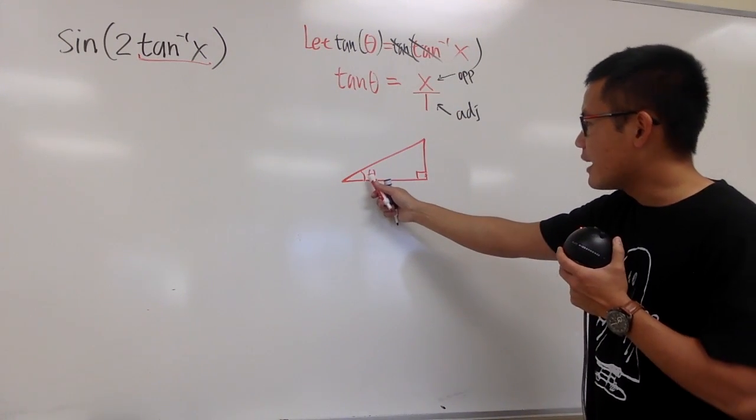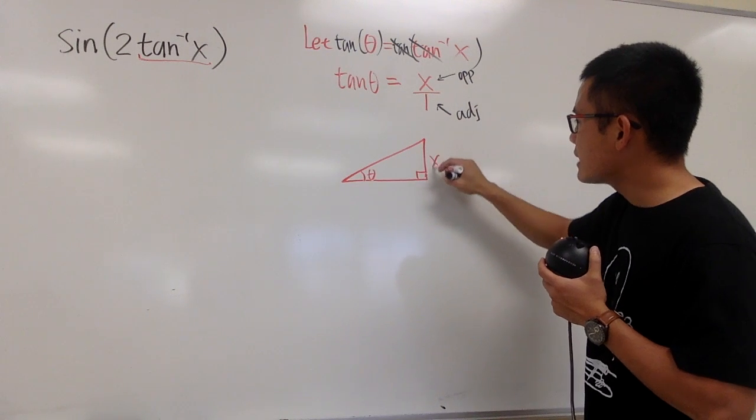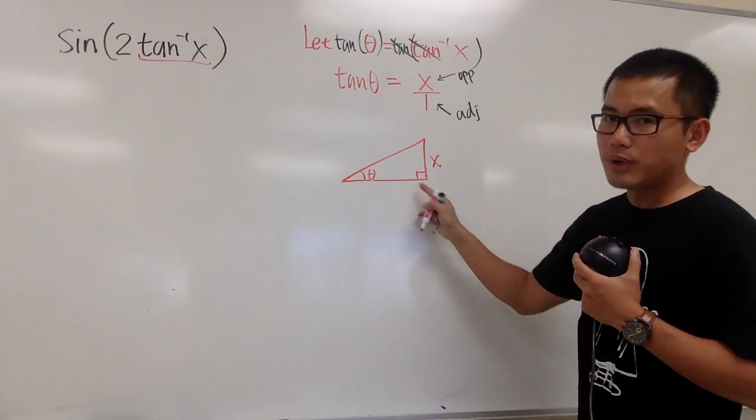So this is the theta angle, and the opposite will be right here, which is x. And the adjacent, which is this right here, will be 1.